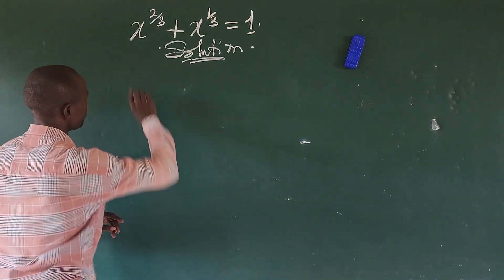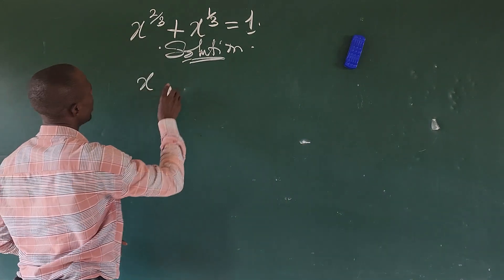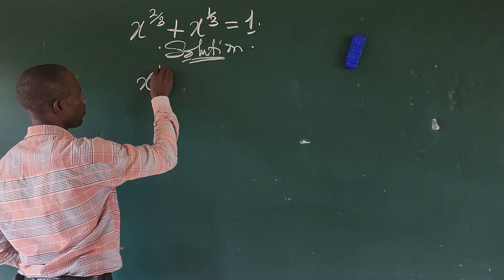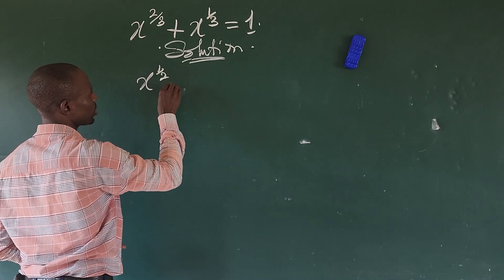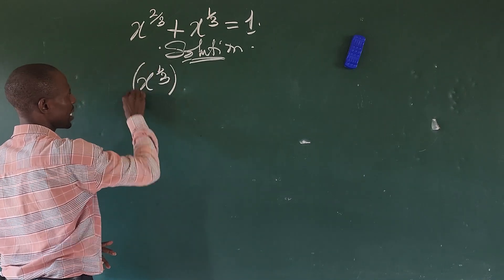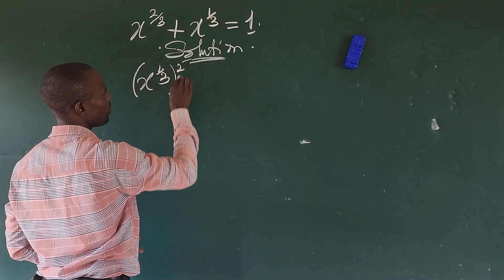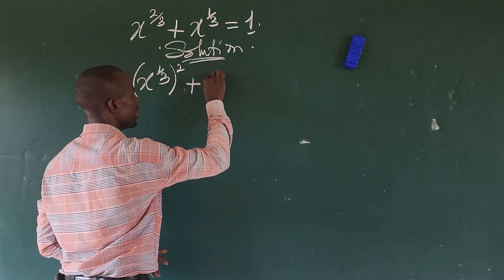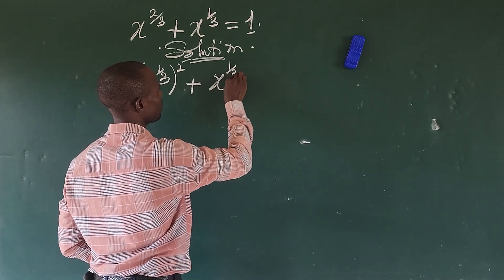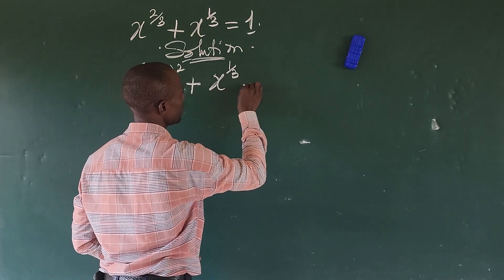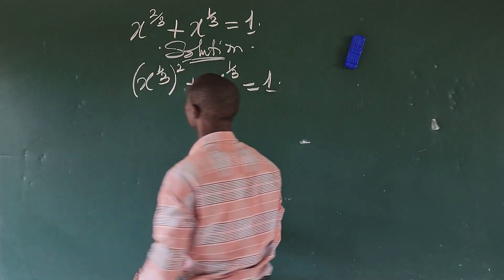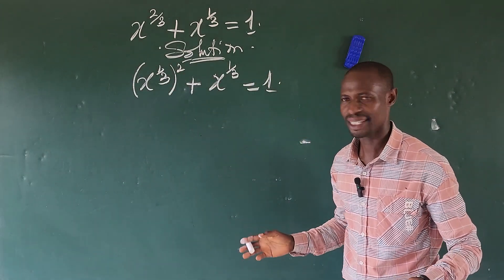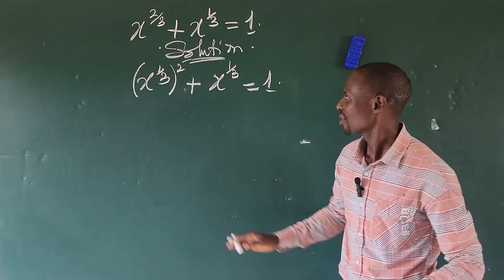Let's go ahead and rewrite this expression. We're going to have x to the power of one-third, close bracket, all raised to power two, then plus x to the power of one-third, equal to one.